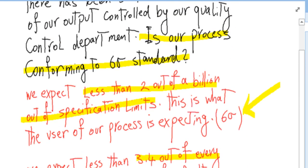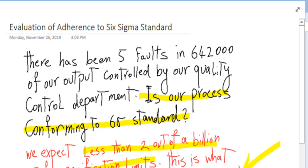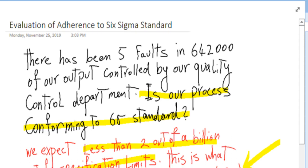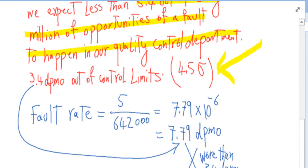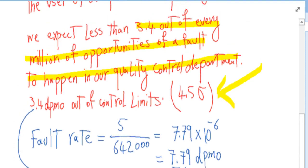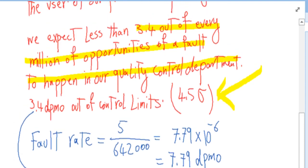So to check if in this specific question we are observing five faults in 642,000 outputs, we have to find out what is the fault rate and whether it is conforming to the standard.